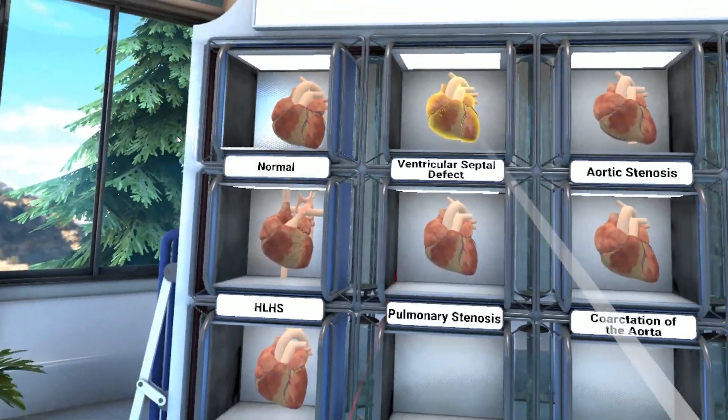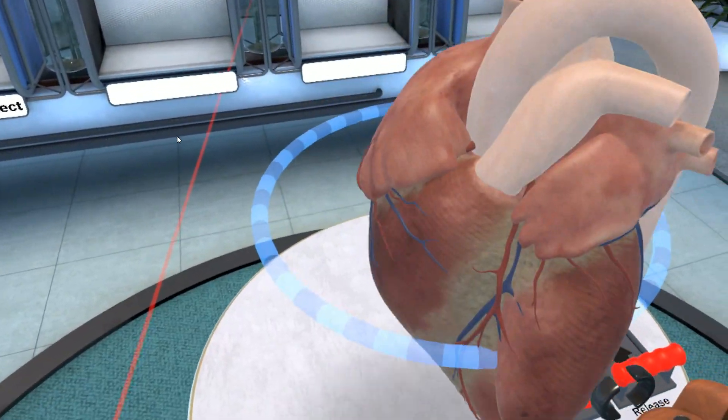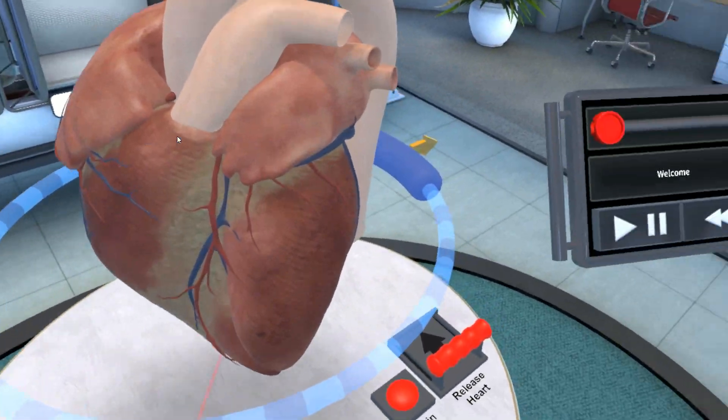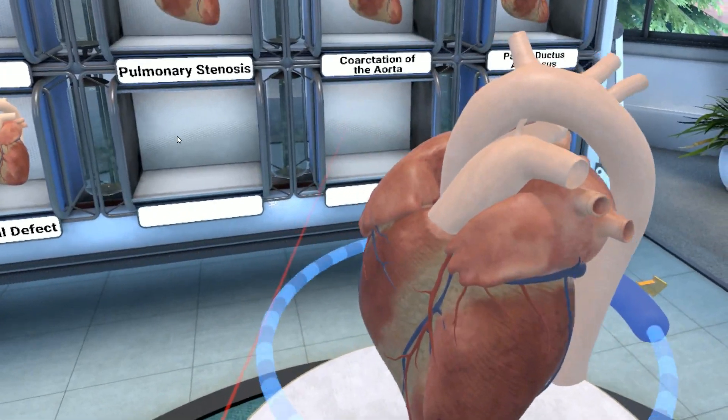Let's put that back and get the VSD, which is one of the most common heart defects that happen with children.